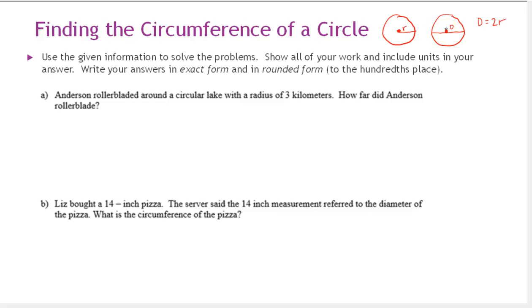A circle doesn't have any line segments like the other figures we found the perimeter of, so we can't just add up the length of the sides — it's completely round. That's why we have a special name: we don't call it the perimeter, we call it the circumference. It is the distance around the circle, and the circumference equals pi times the diameter, or 2 pi times the radius.